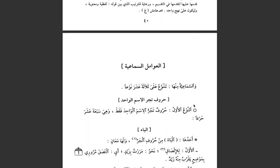The first type is huruf. They are huruf, and what they do is make one ism majroor — they force one ism to take the genitive case, or the jar case. The author mentions 17 huruf; some raise it to 20, but 17 are the famous ones.